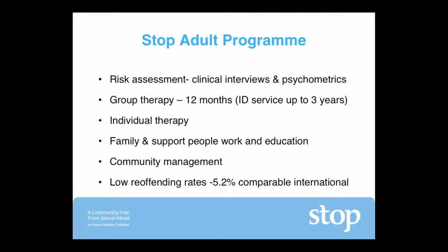And like Corrections, we are interested in assessing their risk as a way of determining what is the best intervention with those clients. The adult programme, essentially a group programme over 12 months, starting with a risk assessment and with a strong family component. And research that shows only a 5.2% reoffending rate, which is actually low.